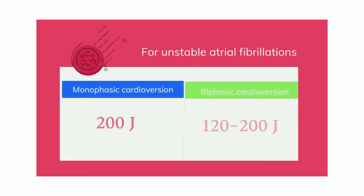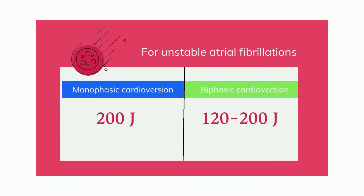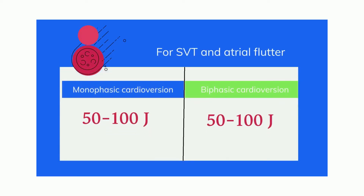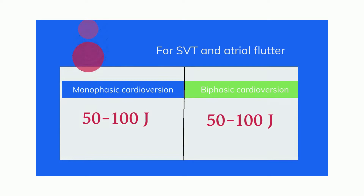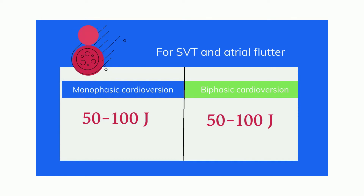The energy dose varies for different types of rhythms. In case of unstable atrial fibrillation, for monophasic cardioversion, an initial 200 joules synchronized shock is delivered. For biphasic cardioversion, an initial 120–200 joules synchronized shock is delivered. In both cases, if an additional shock dose is required, the energy dose should be escalated in a stepwise pattern. For SVT and atrial flutter, for both monophasic and biphasic cardioversion, an initial dose of 50–100 joules of energy is sufficient.